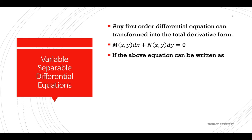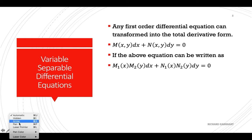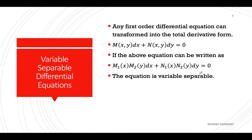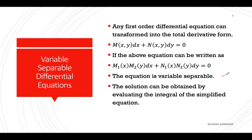If the equation can be written such that M can be expressed as a product of a function of x and a function of y, and also N can be expressed as a product of functions N1 and N2, then the equation is said to be variable-separable.